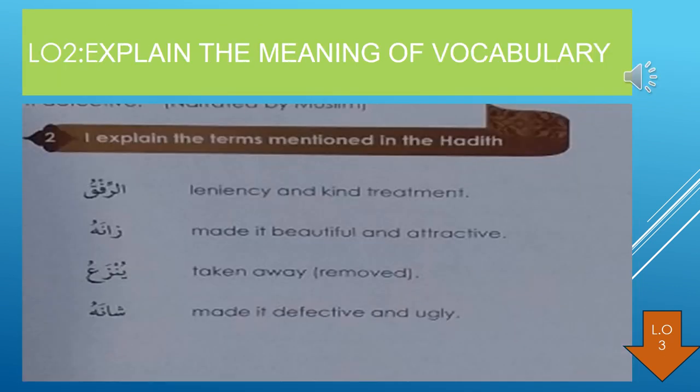The second learning objective: explain the meaning of vocabulary. 'Al-Rifq' means leniency and kind treatment. 'Zaynahu' means made it beautiful and attractive. 'Yunza'u' means taken away or removed. 'Shaynahu' means made it defective and ugly.